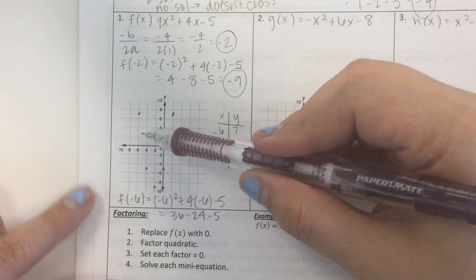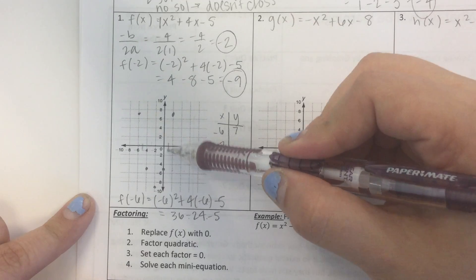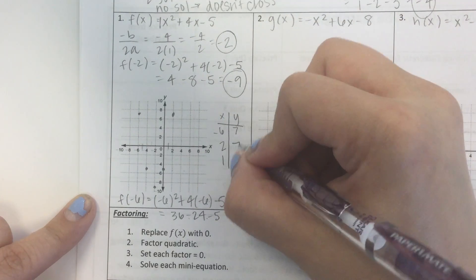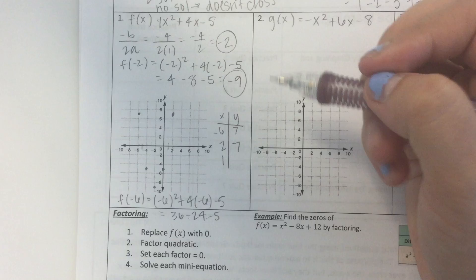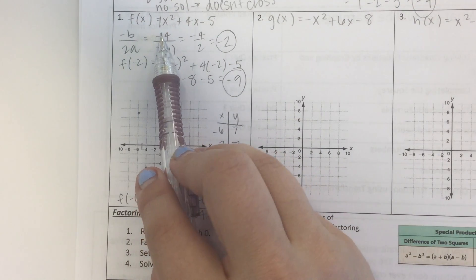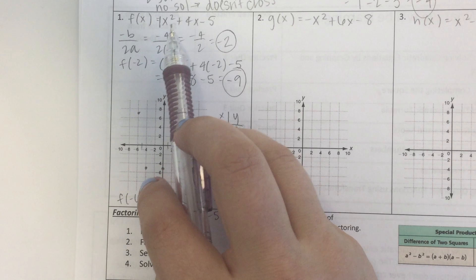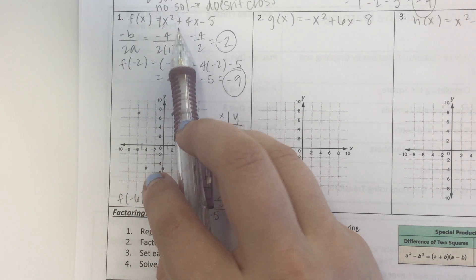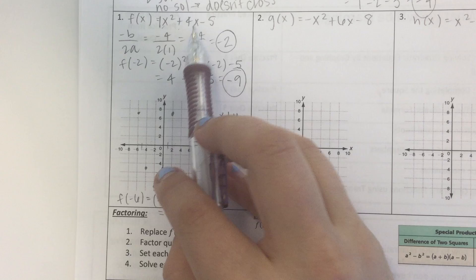I think maybe negative 5 would be 0 right here. And maybe 1. Let's try 1, because 1 is going to be easier. 2 is going to have the same value as negative 6. Let's plug in 1. I'm just going to do it in my head, since it's going to be easier with 1. 1 plus 4 times 1 is 4, minus 5.